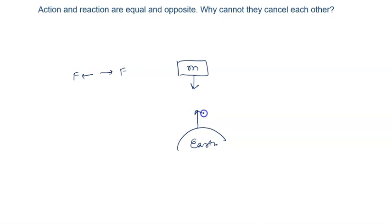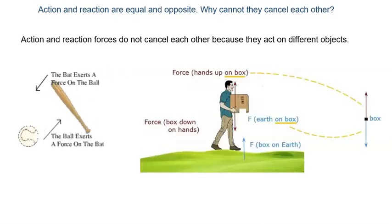is the same force F on the Earth by the block. So you can see equal and opposite forces are acting on different objects. That's why they do not cancel each other. Like in